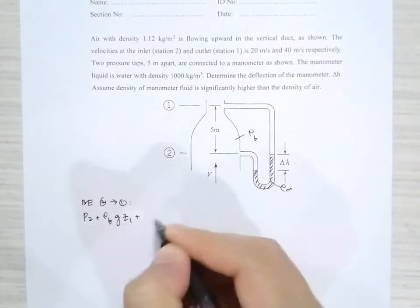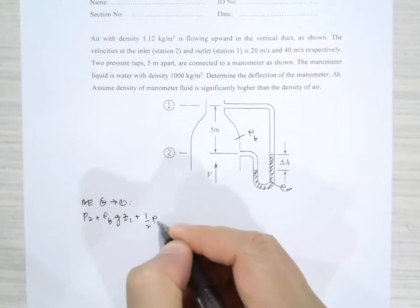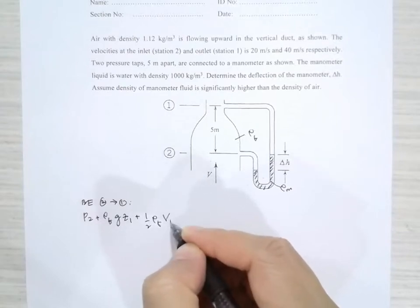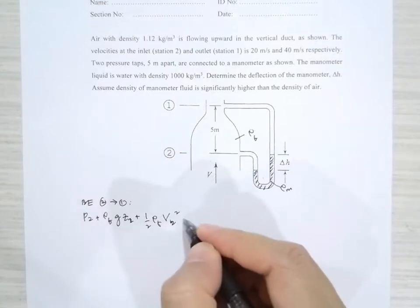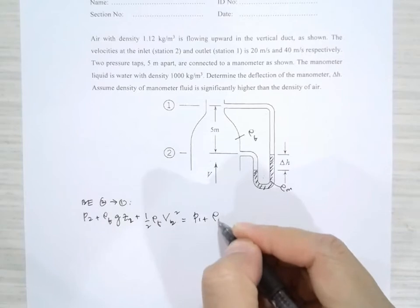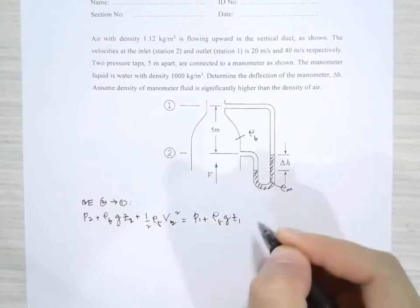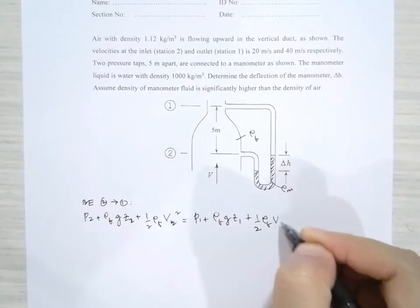GZ2 plus half rho fluid V2 squared is equal to P1 plus rho fluid GZ1 plus half rho fluid V1 squared.